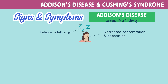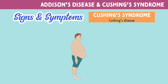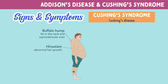With Cushing's syndrome, we see a different set of presenting symptoms such as hirsutism, which is abnormal hair growth on the face or body for females, a buffalo hump, which is fat in the neck and supraclavicular area, sensitive thin skin which easily bruises, and a moon face.